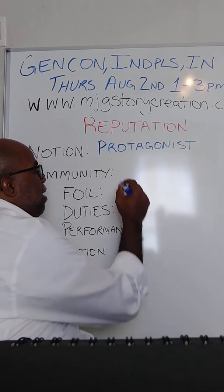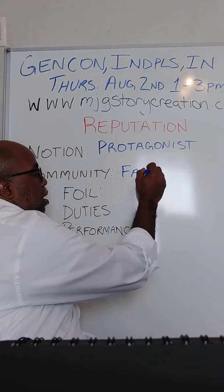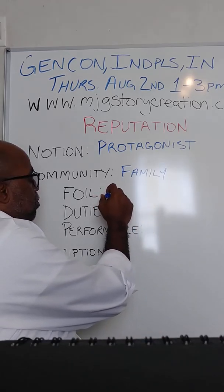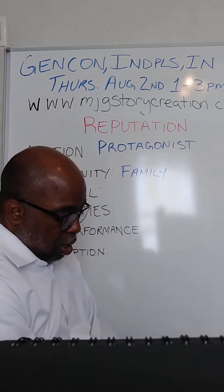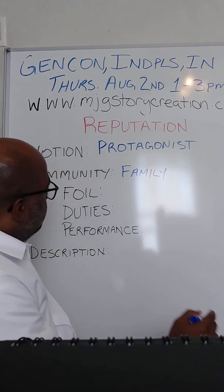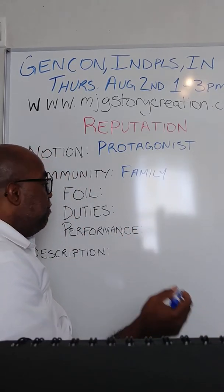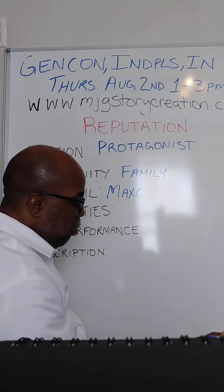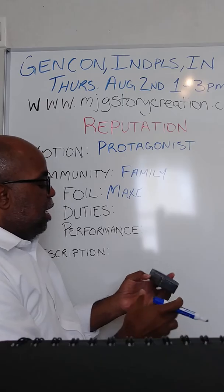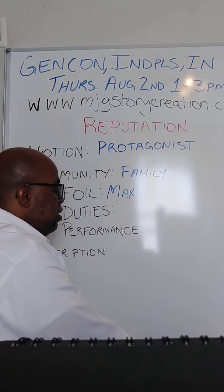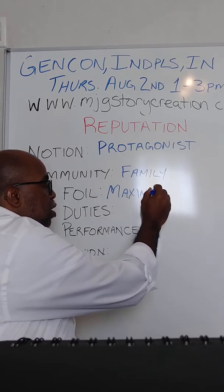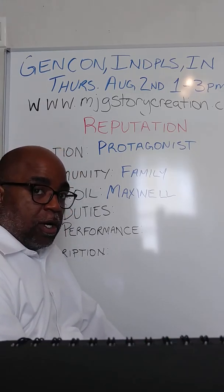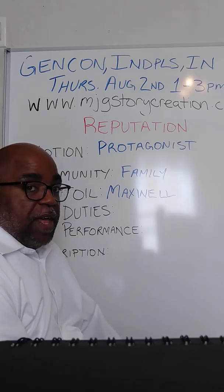This community is family. The associated foil is Max — Maxwell, actually. You could put first and last name; I haven't decided on a last name for Max yet, so I'm just going to put Maxwell. He is the best friend. He is the naturalized citizen who is from the host country — the contact to the host country, how Drayvon gets the job and the opportunity. They consider themselves brothers.